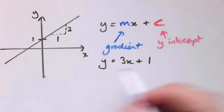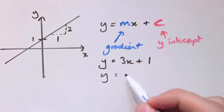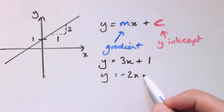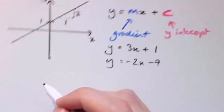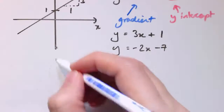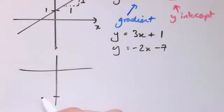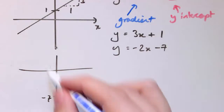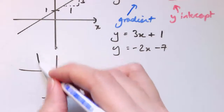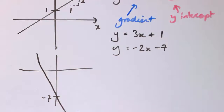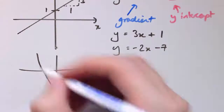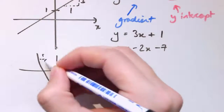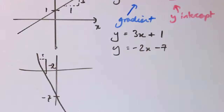Similarly, we could have negative values, so y equals minus 2x minus 7 — same idea. This would go through y equals minus 7 and has gradient minus 2, so it's going down from left to right: as x goes across 1, y goes down 2.